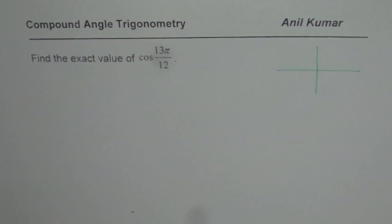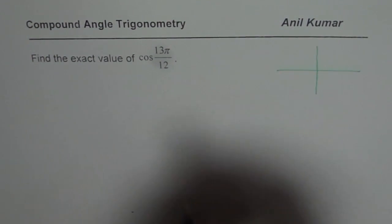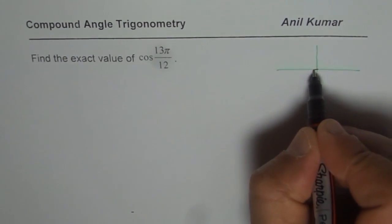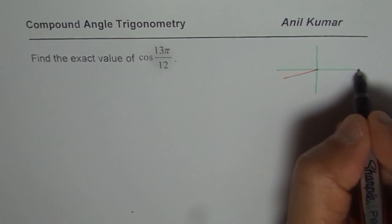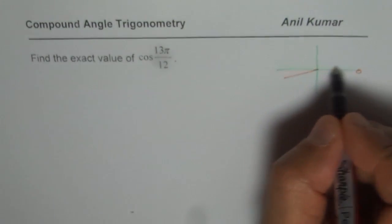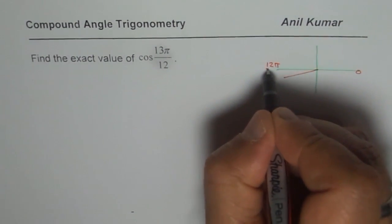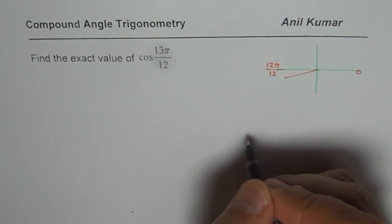Let's say that's our coordinate plane. When we say cos of 13π/12, that means the angle is kind of like here. So if I start with 0 and I divide each part into 12 equal parts, then I have 12π/12 here, which is π, correct?